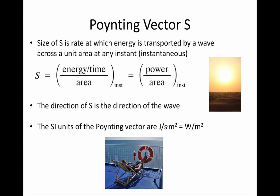So the size of the Poynting vector is the instantaneous power divided by the area. That gives units for the vector of watts per square meter. The direction of the vector is just the direction the wave is travelling.